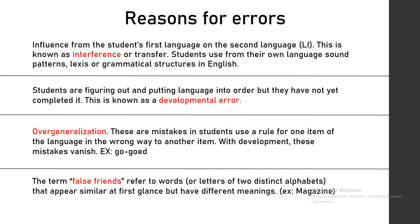The next reason is developmental error — students are figuring out and putting language into order, but have not yet completed it. The following is overgeneralization: mistakes in students' use of a rule for one item of language applied incorrectly to another. With development, these mistakes vanish. For example, the verb 'go' — the past form is 'went,' but students may say 'goed.'